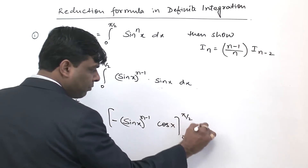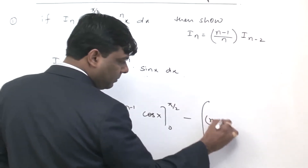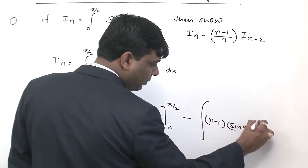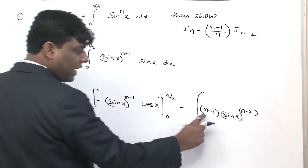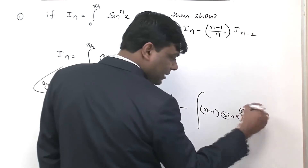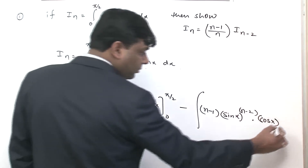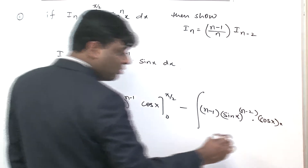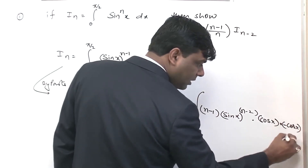So I_n equals sin x to the power n minus 2 times sin x to the power n minus 1 integration. The differential of sin x is cos x, and the integration of sin x is minus cos x dx.